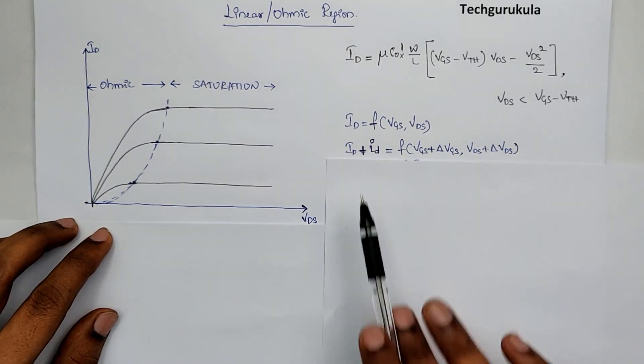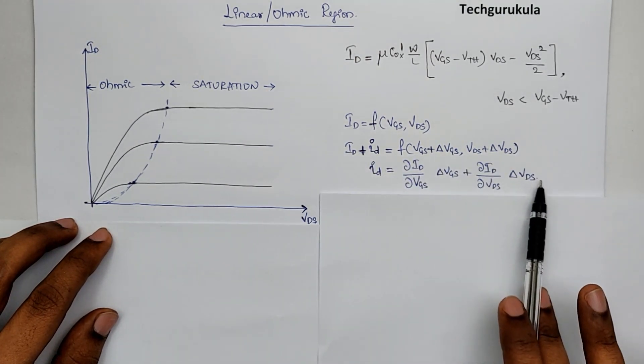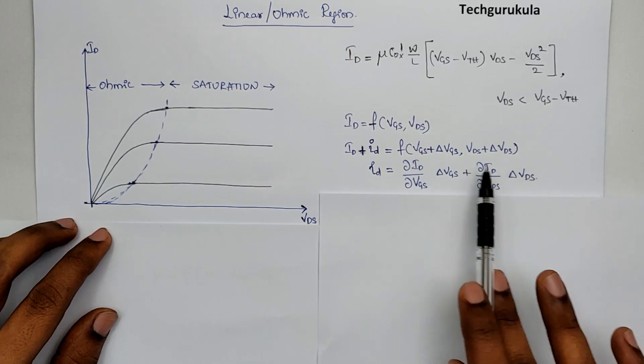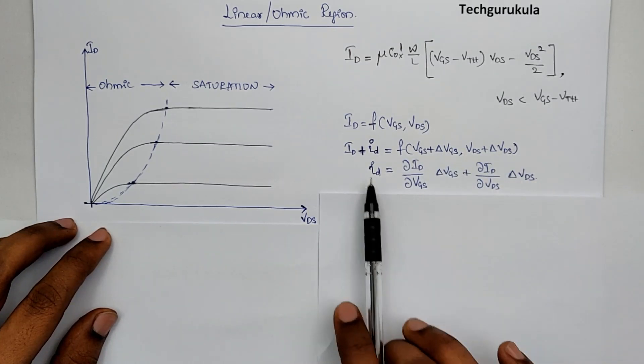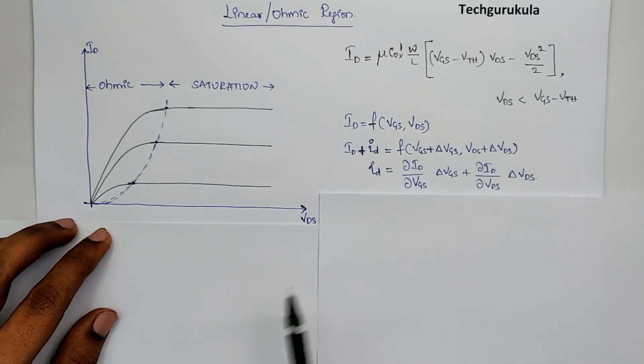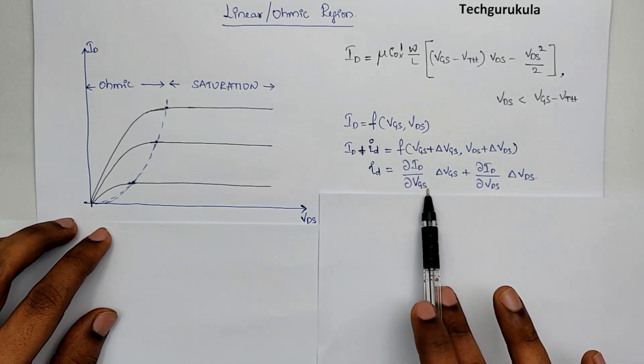Just this small ID can be equated to by doing a Taylor series expansion till just the first order. This can be expanded only if the delta VGS and delta VDS are small. Hence, this will be called a small signal model. The small ID is equal to the partial differentiation of ID with respect to VGS.